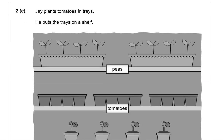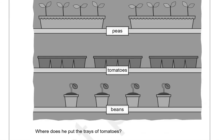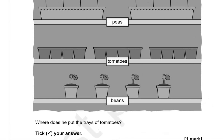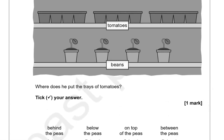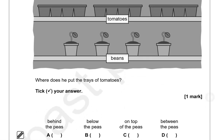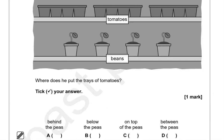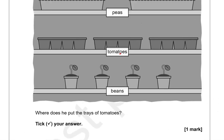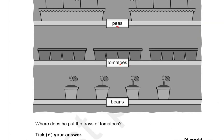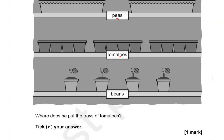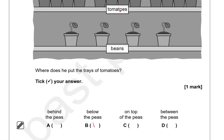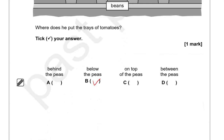Jay plants tomatoes in trays and puts the trays on a shelf. Where does he put the trays of tomatoes? The options are: behind the peas, below the peas, on top of the peas, or between the peas. Looking at the image, the tomatoes are below the peas, so option B is correct.